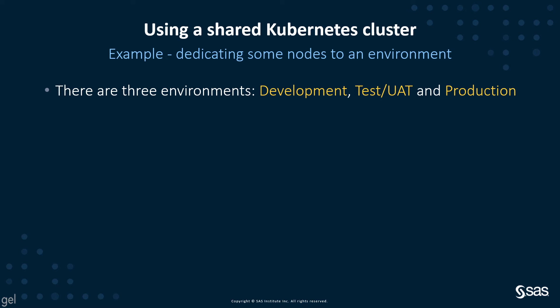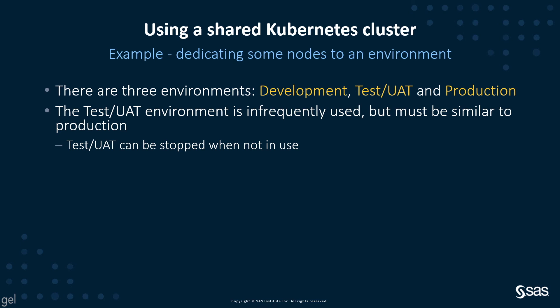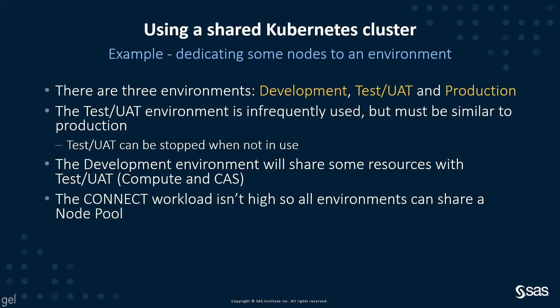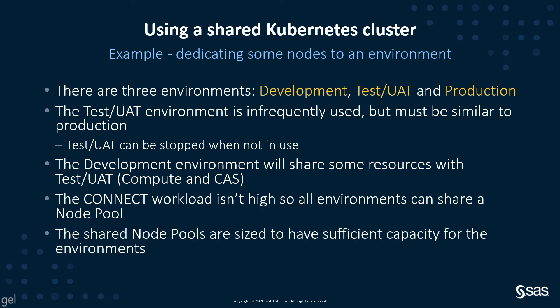Now let's look at an example of dedicating some nodes to an environment. Let's say we have three environments: development, test or UAT, and production. The test or UAT environment is infrequently used but must be similar to production; however, it can be stopped when not in use. The development environment will share some resources with test UAT — for example, the compute and CAS node pools. SAS Connect workload isn't expected to be high, so all the environments can share a node pool. The shared node pools are sized to have sufficient capacity for the environments.